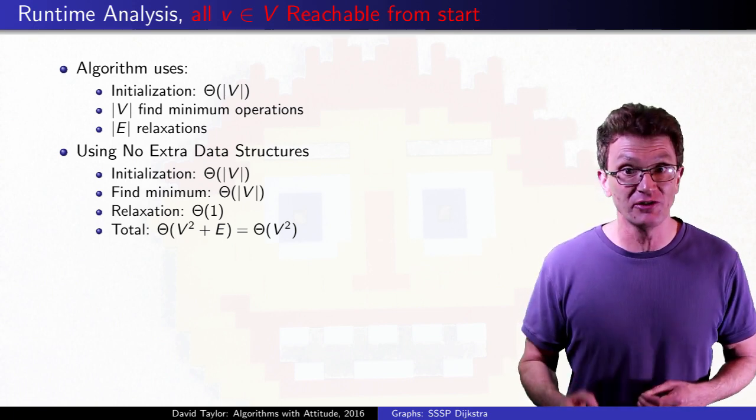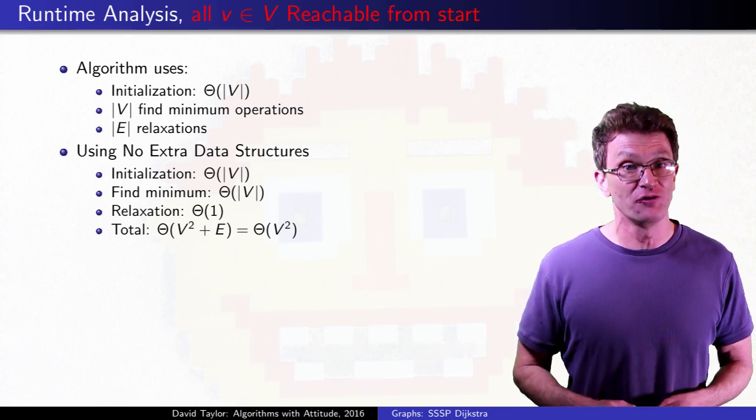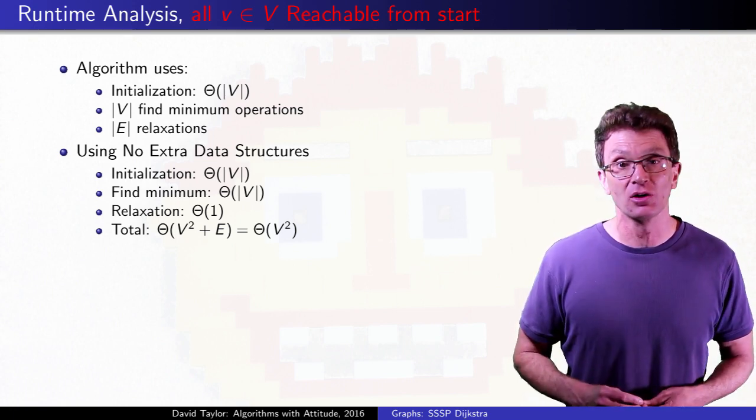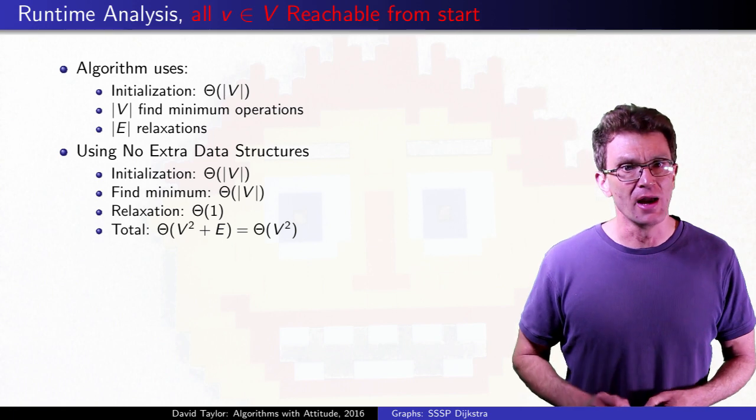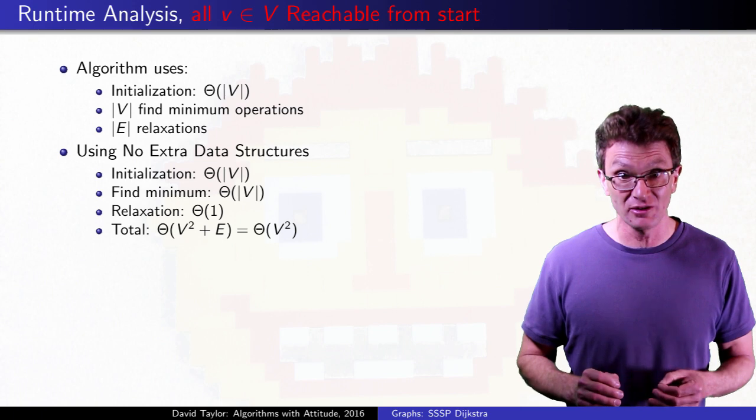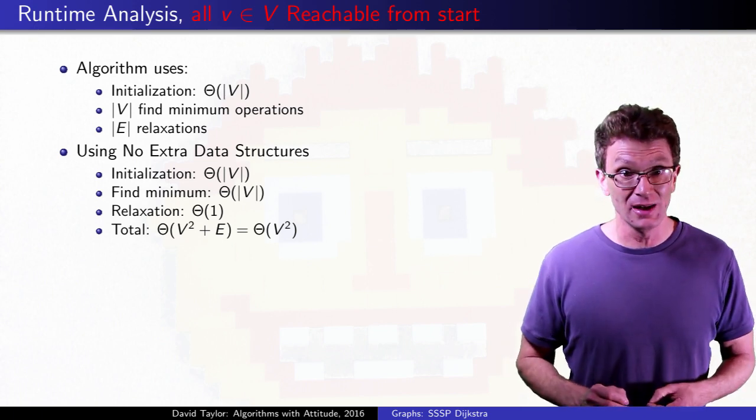Now, if your graph is dense enough, if you really have order V squared edges, that's as good as you can get. It's linear in the graph size. On the other hand, if you have a sparse graph, that doesn't look as good.